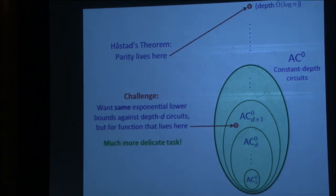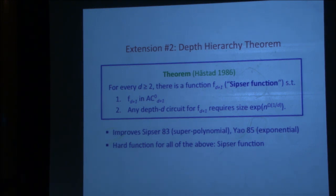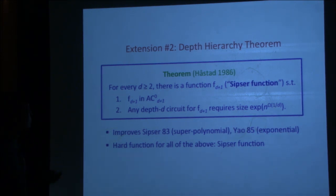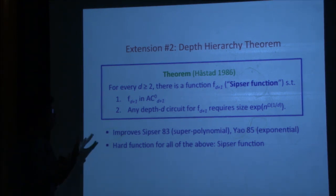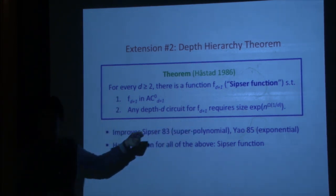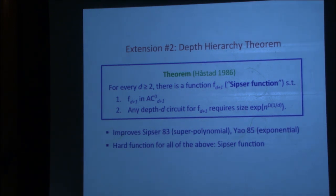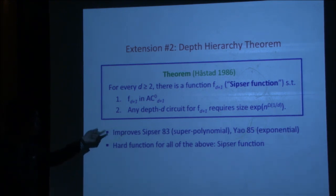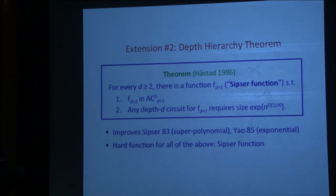This is already known. In his thesis, Hastad showed that for every depth d greater than 2, there's a function F_{d+1}, the so-called Sipser function, such that F_{d+1} is simple — it lives in depth-(d+1) AC0 — but just like parity, any depth-d circuit for the (d+1)-th Sipser function requires size 2 to the n to the 1 over d. This improves on Sipser, who first showed a super-polynomial separation, later improved to exponential by Yao.